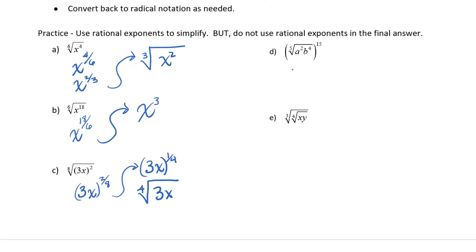I'll rewrite this as a to the second, b to the fourth, in parentheses. And then on the outside, the numerator will be fifteen and the denominator of the exponent will be five.